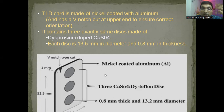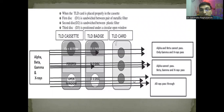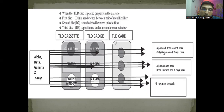The TLD card consists of nickel coated with aluminum and has a V-notch at the upper end so that orientation is correct. It has exactly three discs made of dysprosium-doped calcium sulfate. Each disc is 13.5 mm in diameter and 0.8 mm in thickness. This is exactly what you need to speak in the table viva — nothing less than this. The overall dimensions are 52.5 and 39 mm. The filters: the uppermost filter is a metal filter made of copper and aluminum which attenuates gamma radiation. Then we have a plastic or perspex filter and the lower one is an open window.